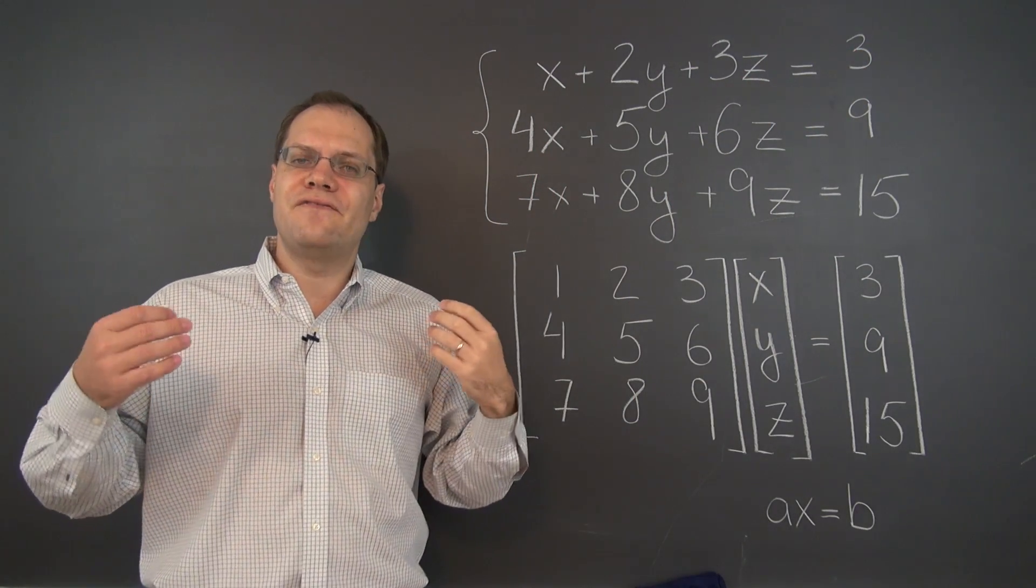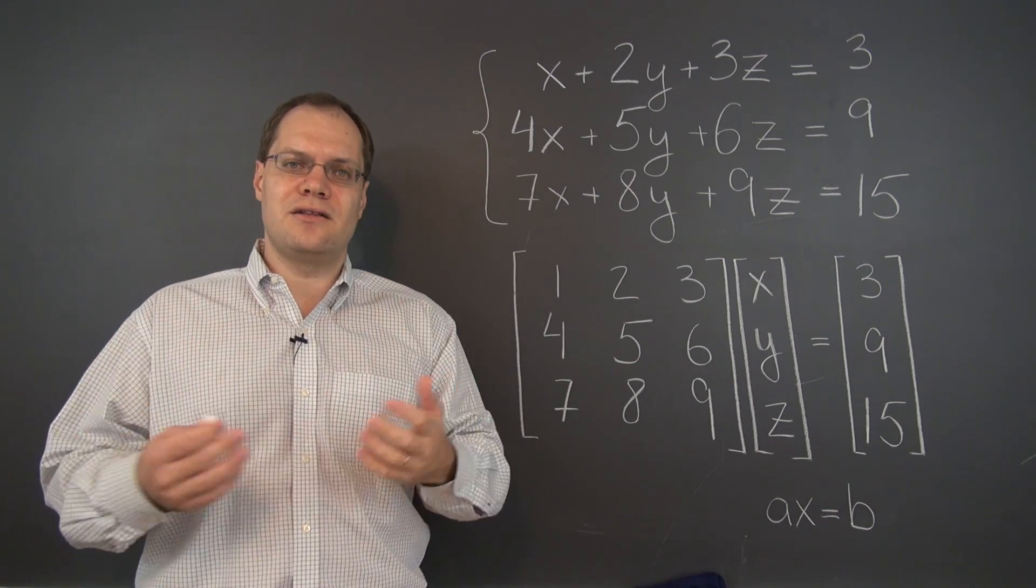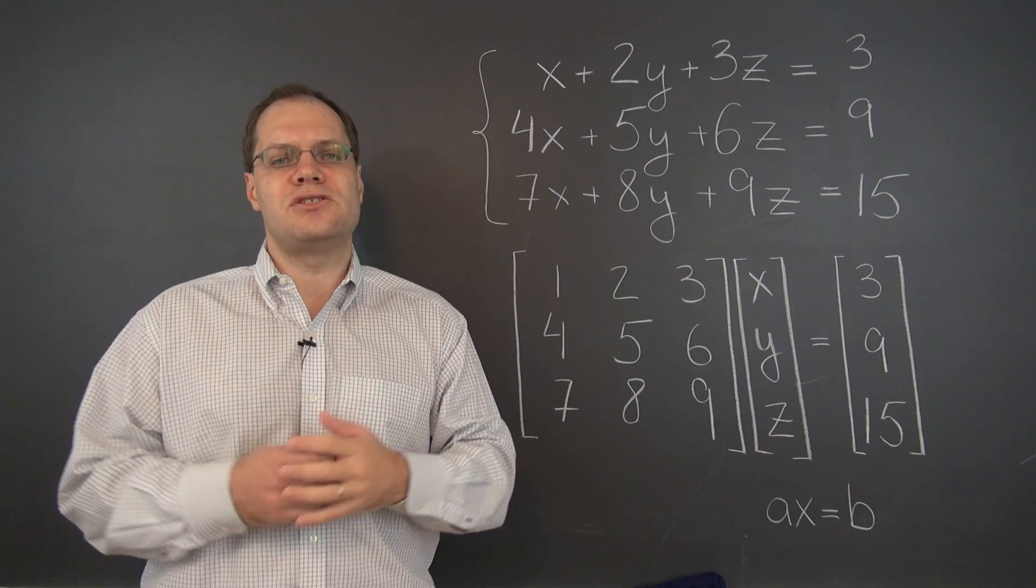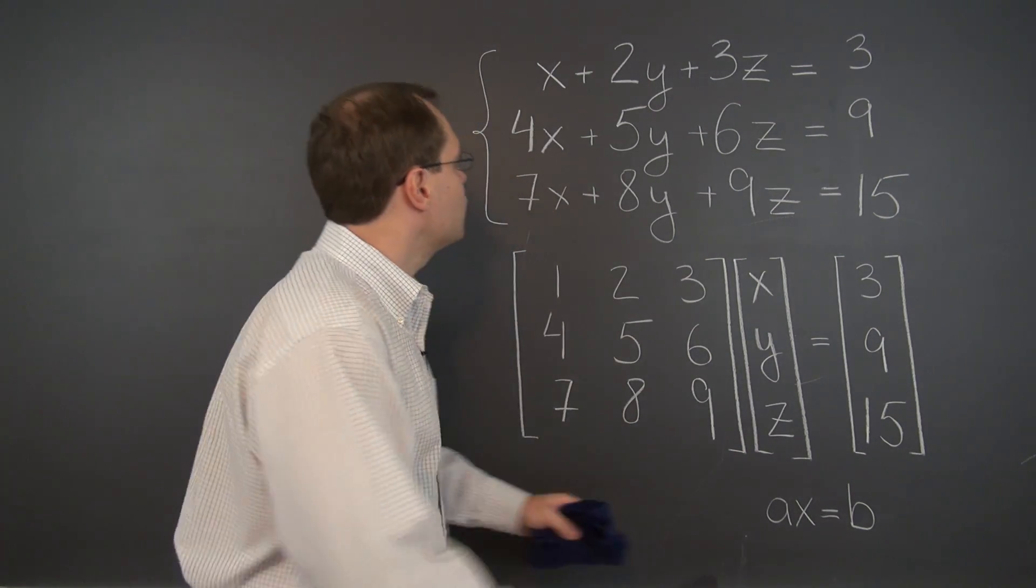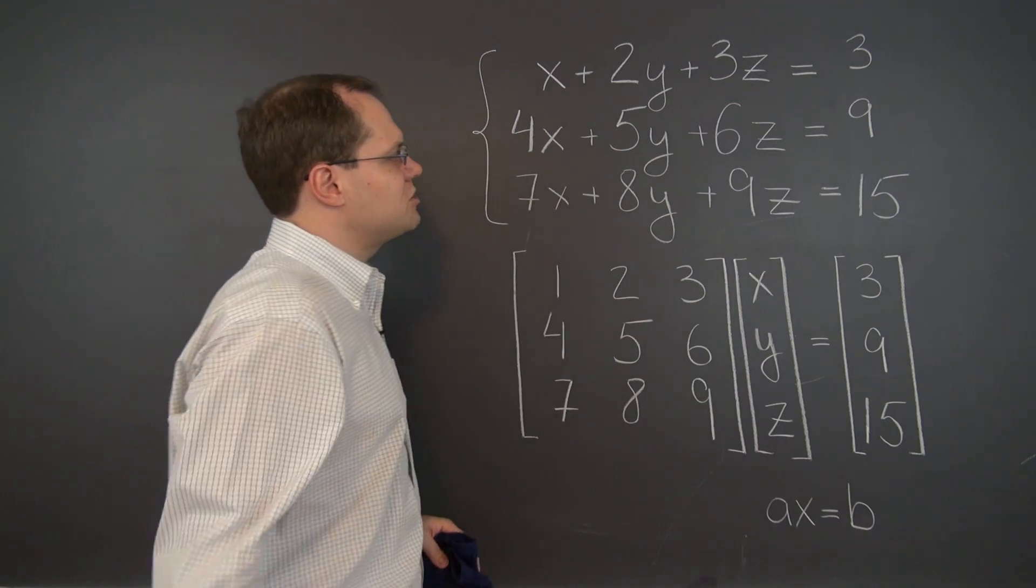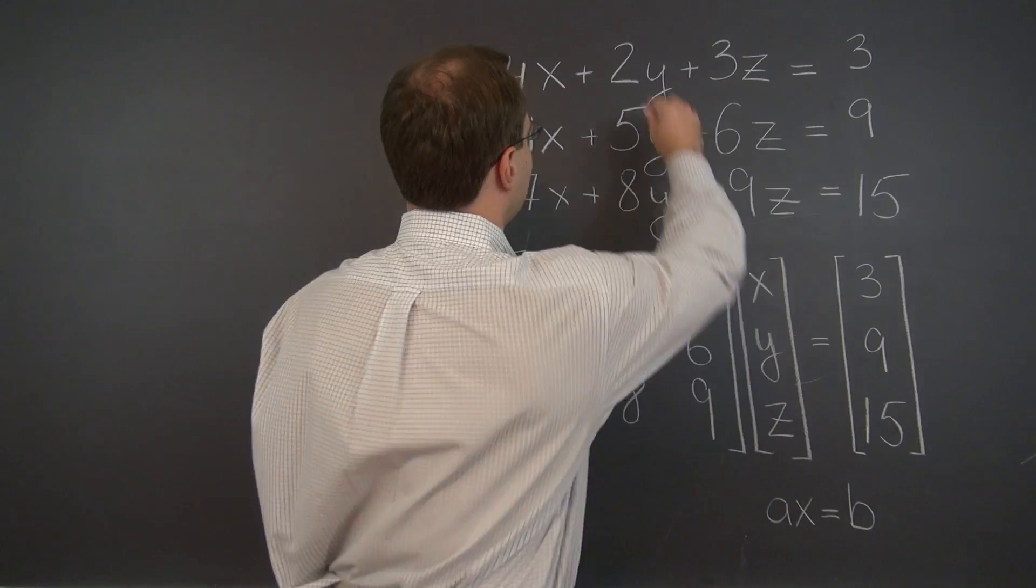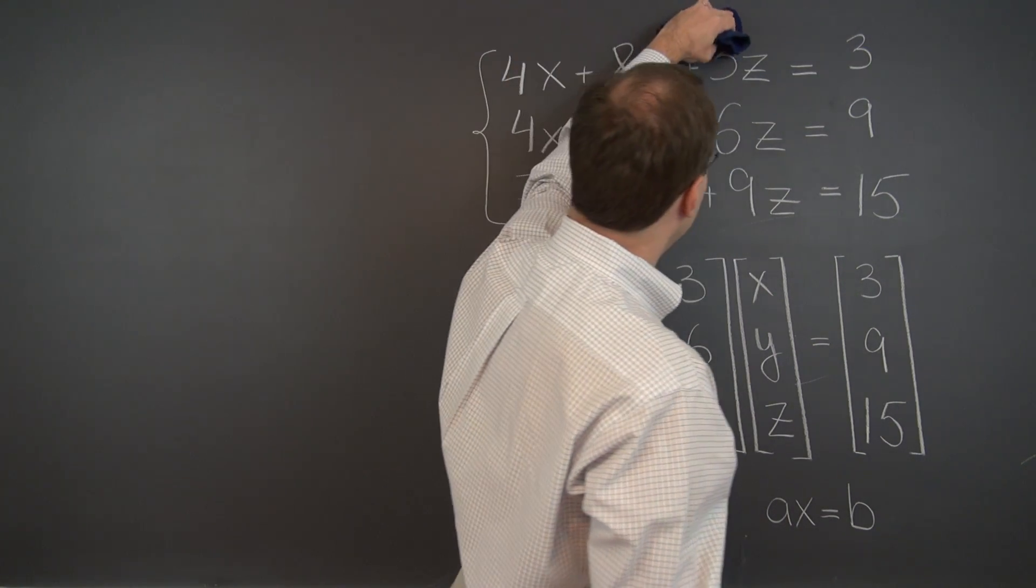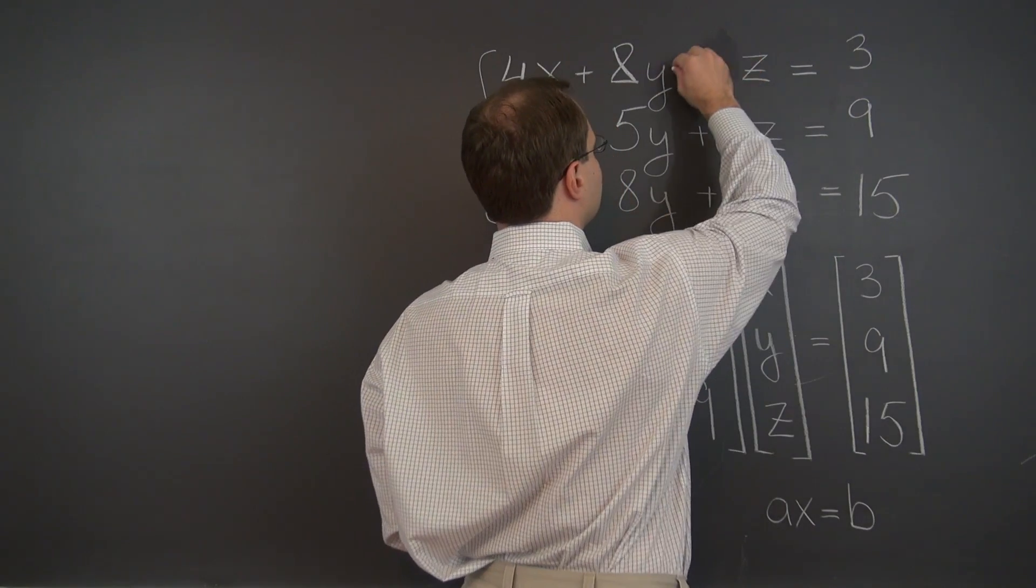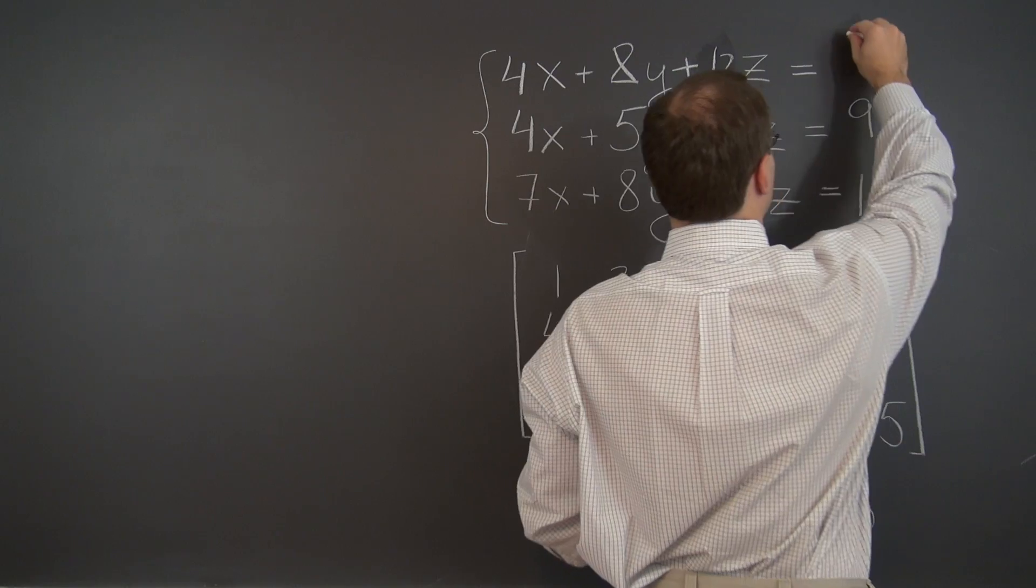So that's certainly a valid operation you can perform on the system of equations, or a single equation that won't change its solution. Okay, so let's do that. So multiplying the entire first equation by 4 puts a 4 here, I can do this without erasing, and 8 here, and a 12 here. And the whole thing equals 12.